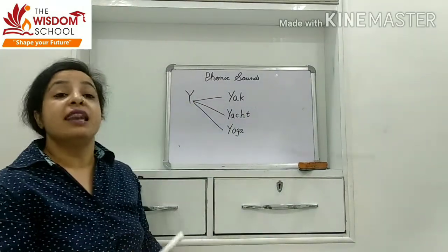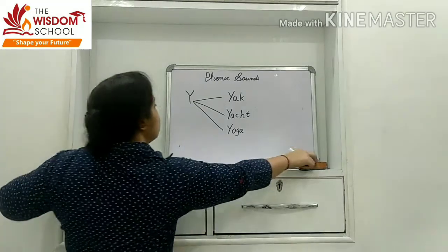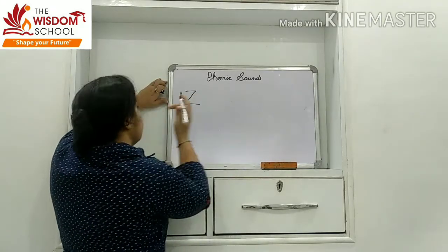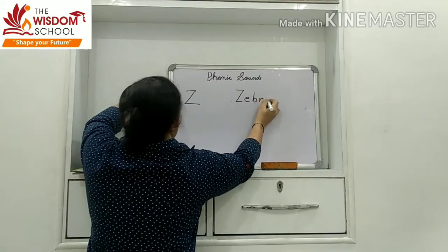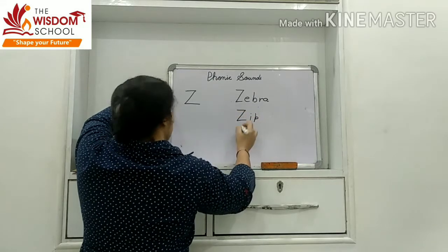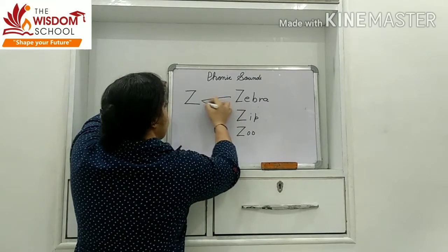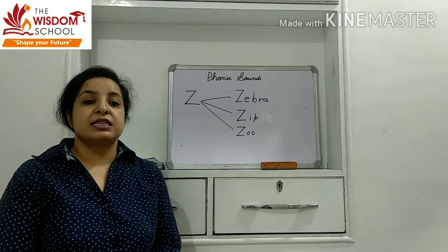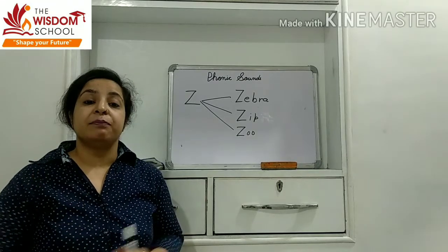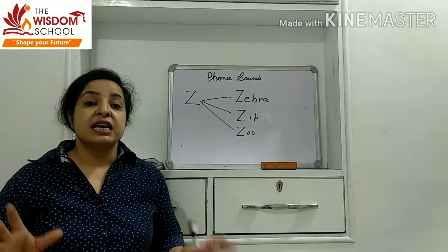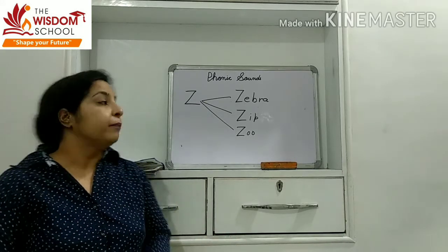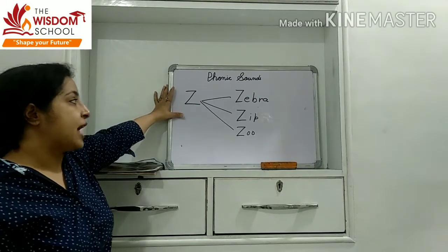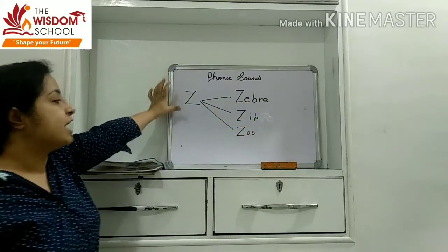Now come to the next letter — our last letter — letter Z. Very easy letter. Letter Z — Z for zebra, Z for zip, Z for zoo.